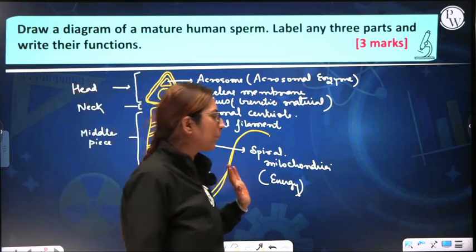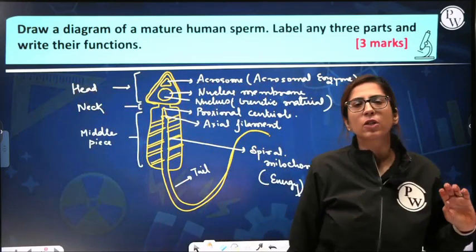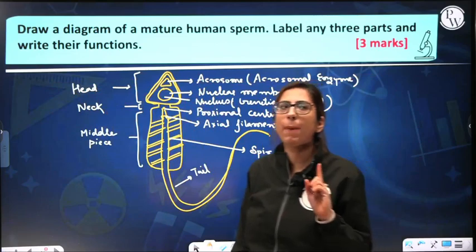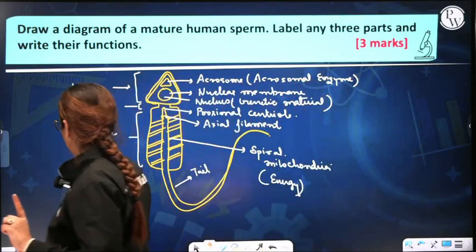Four parts: head, neck, middle piece, and tail. Head has enzymes and the nucleus with genetic material. The middle piece has mitochondria providing energy. The tail helps in movement — each part and its function should be clear to you.